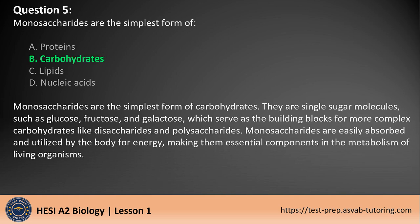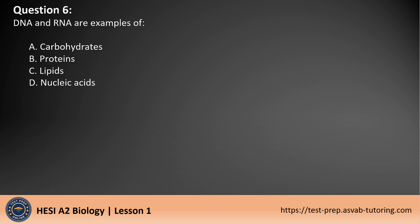The answer is B. Monosaccharides are the simplest form of carbohydrates. They are single sugar molecules, such as glucose, fructose, and galactose, which serve as the building blocks for more complex carbohydrates like disaccharides and polysaccharides. Monosaccharides are easily absorbed and utilized by the body for energy, making them essential components in the metabolism of living organisms.